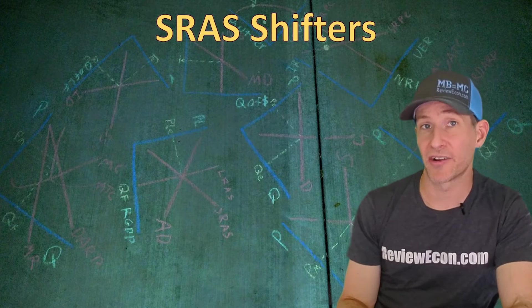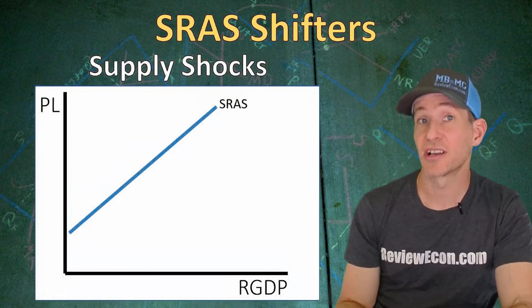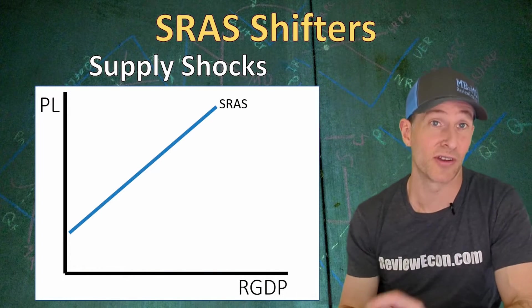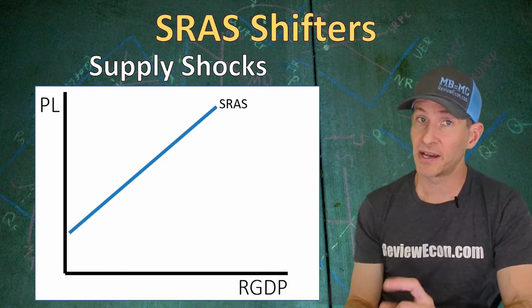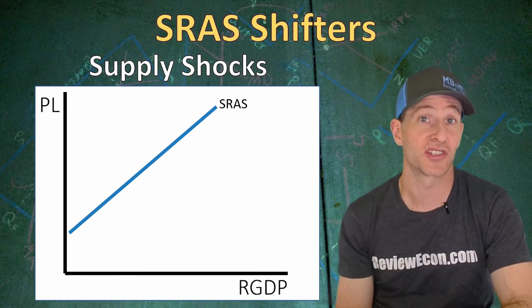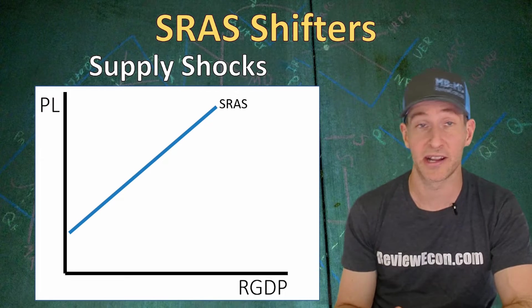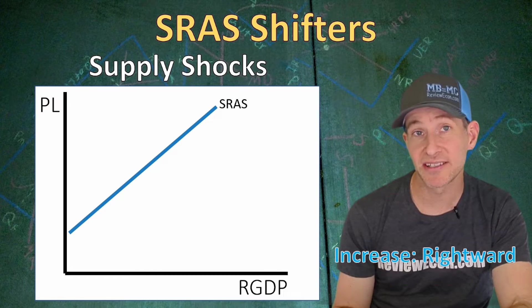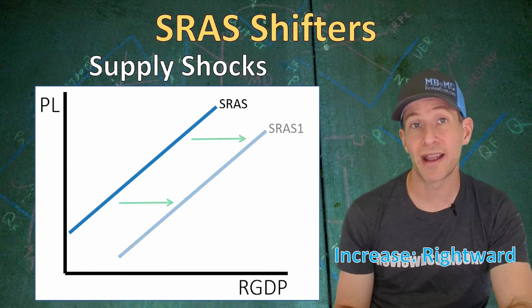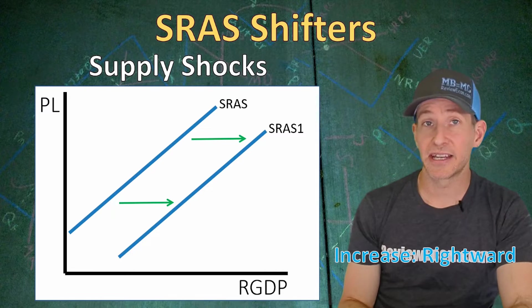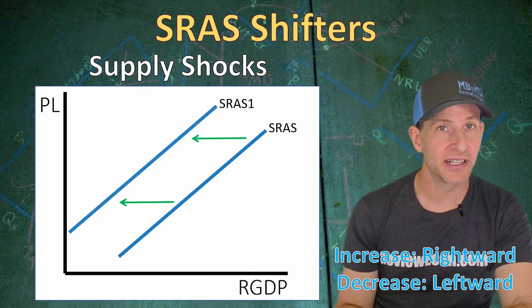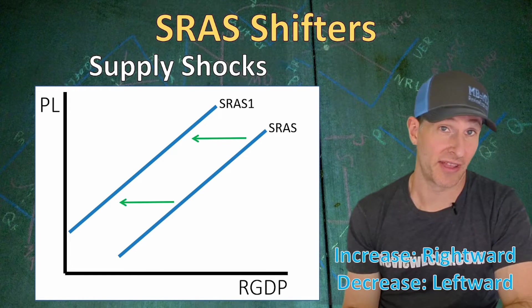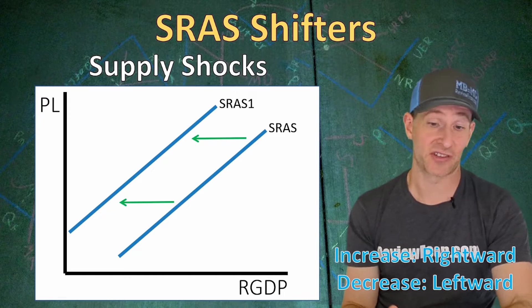Next we're going to talk about short run aggregate supply shifters, also called supply shocks. If we have a change in the price level, that's going to cause movement up or down that short run aggregate supply curve. But if short run aggregate supply changes, that means the curve has shifted, and we get a new quantity of real GDP output at every price level. A positive supply shock means we have an increase in supply, and that's going to mean a rightward shift. A negative or adverse supply shock means a decrease in short run aggregate supply — a shift to the left.